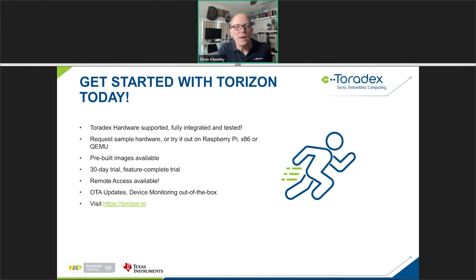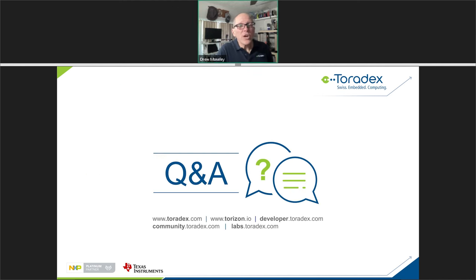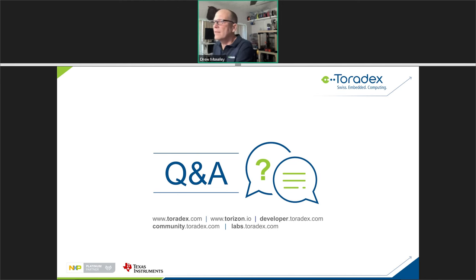Moving into Q&A with about 15 minutes remaining. On licensing: Torizon OS is completely open source with no restrictions, and all layers are open for custom Yocto builds. The Torizon cloud platform is a paid service billed per device per month with volume discounts. The cloud itself is not open source but is based on open source components — specifically the Uptane specification and its reference implementations.